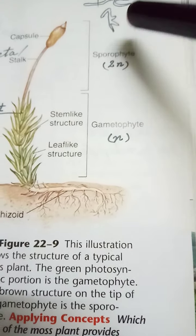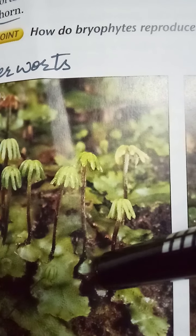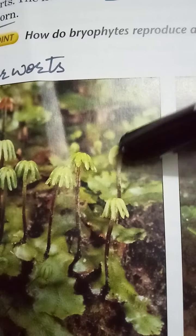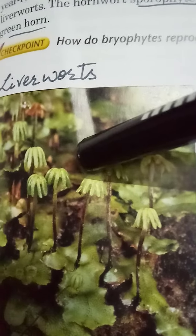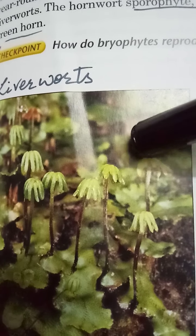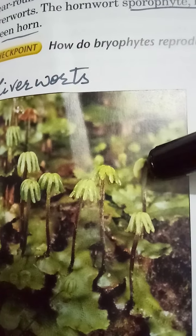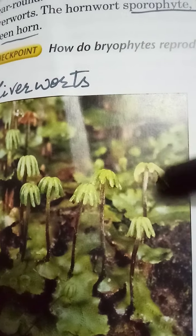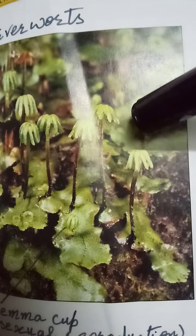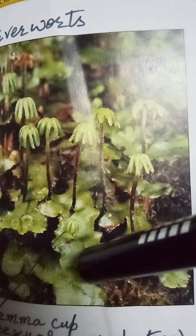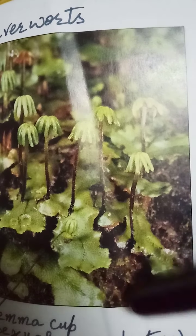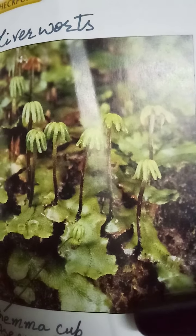The second class is Hepaticopsida, also known as liverworts. Liverworts get their name from the fact that some species resemble the shape of a liver. When the plants mature, the gametophyte produces structures that look like tiny umbrellas, which carry antheridia and archegonia that produce sperm and egg. On fertilization, they develop into the sporophytic generation. Asexual reproduction in liverworts occurs through gemma cups, which contain many haploid cells that can divide by mitosis to produce a new individual.